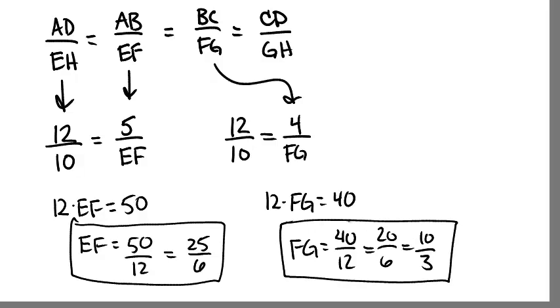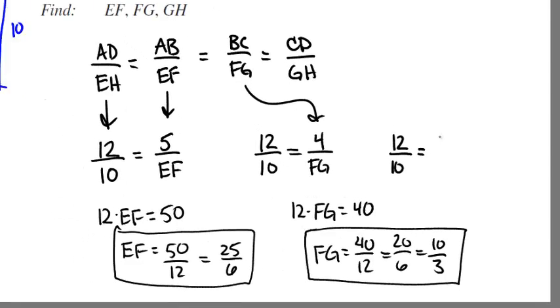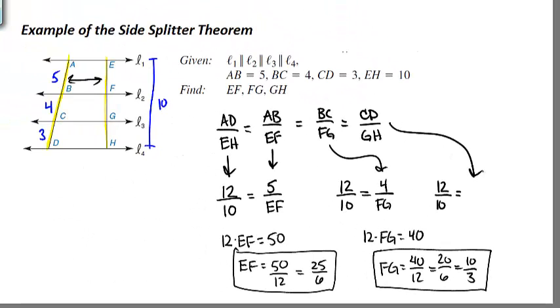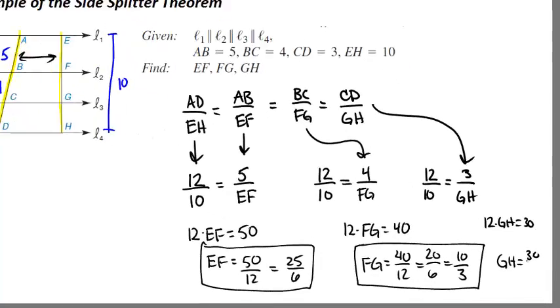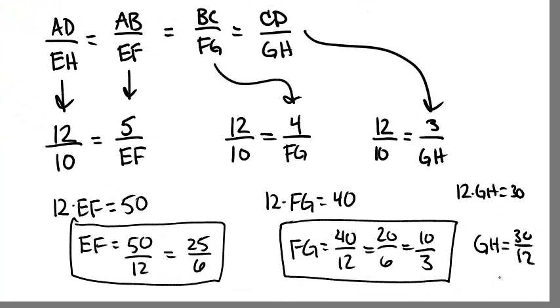We can set up the final proportion. Again, we know that the ratio of AD to EH, so 12 to 10, is equal to the ratio of this time CD to GH. We know CD is 3, GH we don't know. We cross-multiply to get that 12 times GH is equal to 30. So GH is 30 over 12, which reduces down to be 15 over 6.